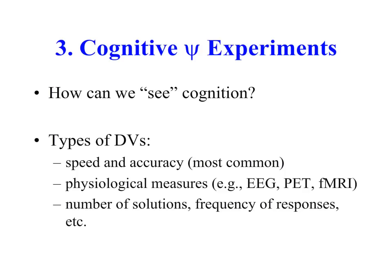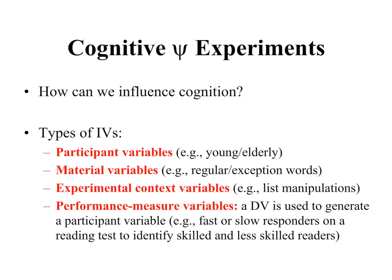How do cognitive researchers see cognition? We see it through the controlled manipulation of an independent variable on the dependent variable. The most common types of dependent variables in cognitive research involve speed and accuracy. Other types of measures include physiological measures — electroencephalograms, PET, and fMRI (functional magnetic resonance imaging). We can also explore the number of solutions to problems and the frequency of responses.